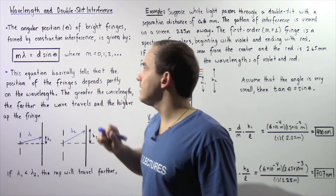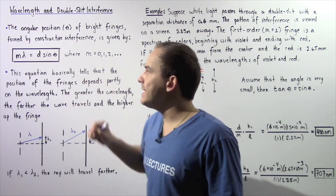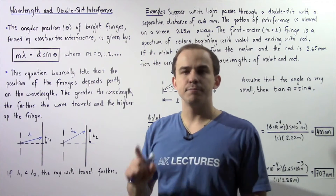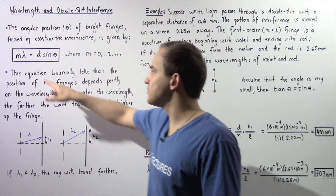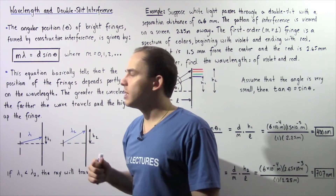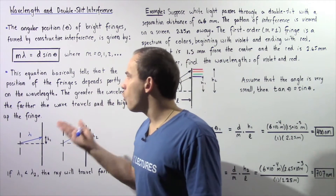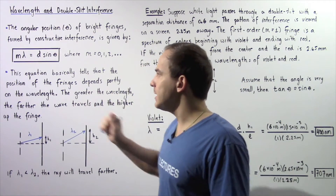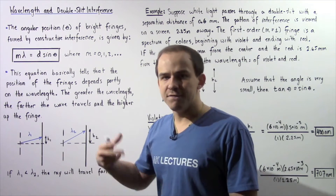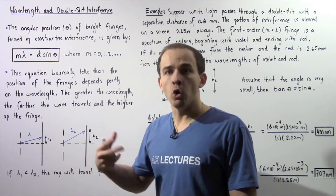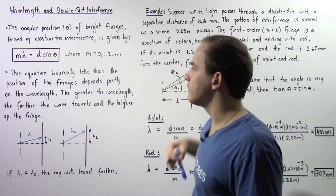Where theta is the angular position of the bright fringe, d is the separation distance between those two openings — between those two slits — lambda is the wavelength of the particular wave that is forming that fringe, and m is the order of the fringe, given by a whole number that could be 1, 2, 3, and so on.